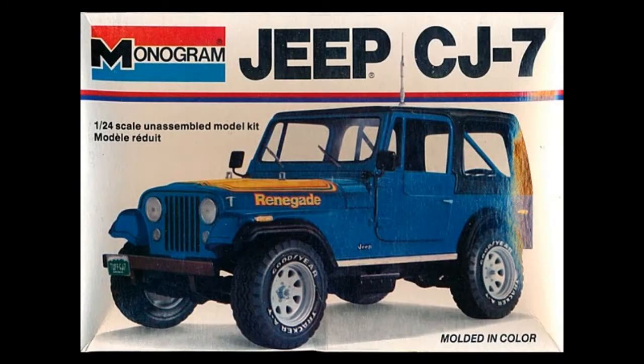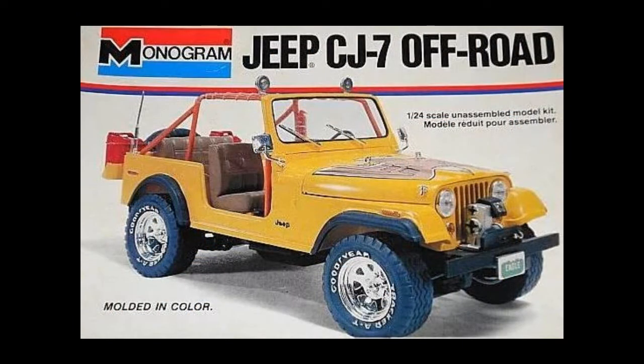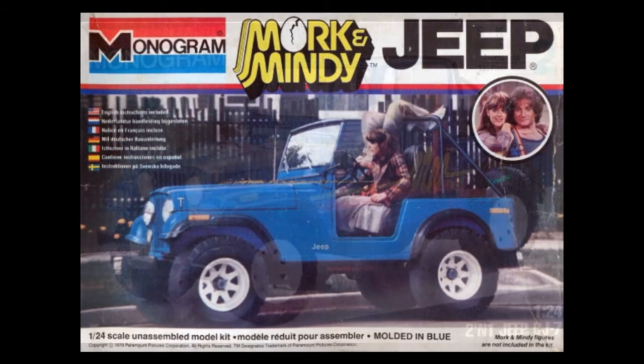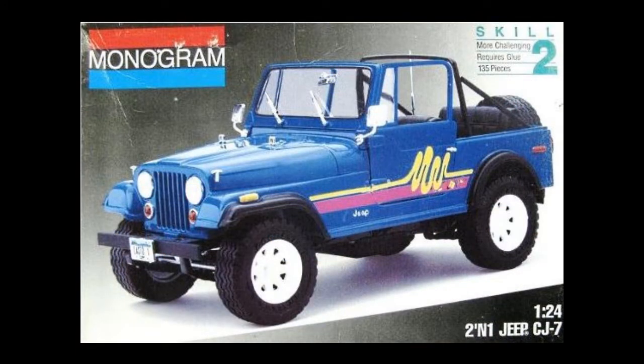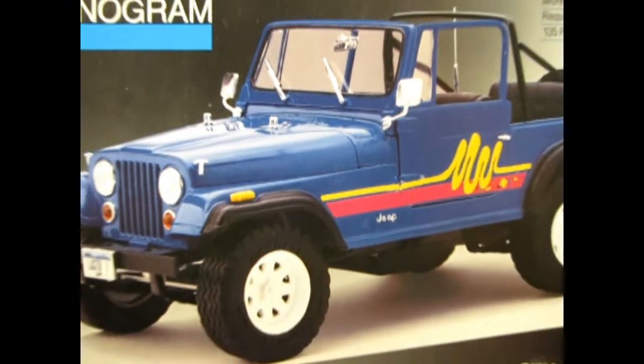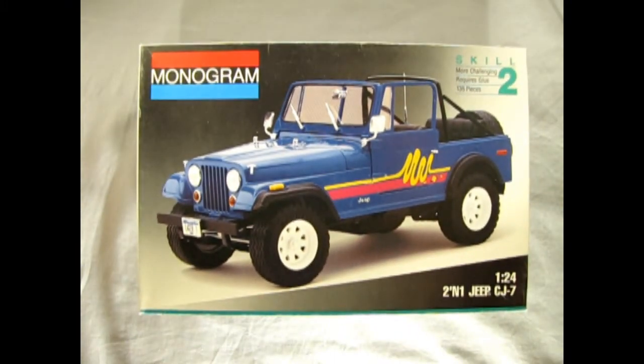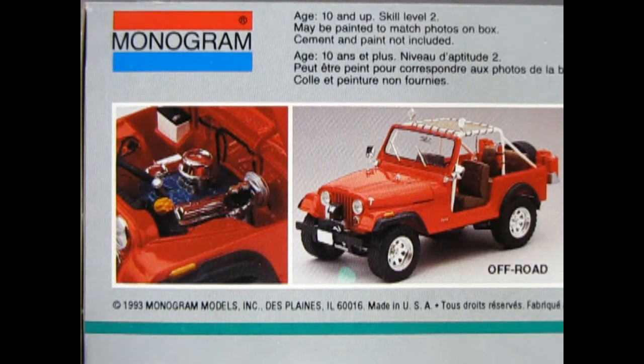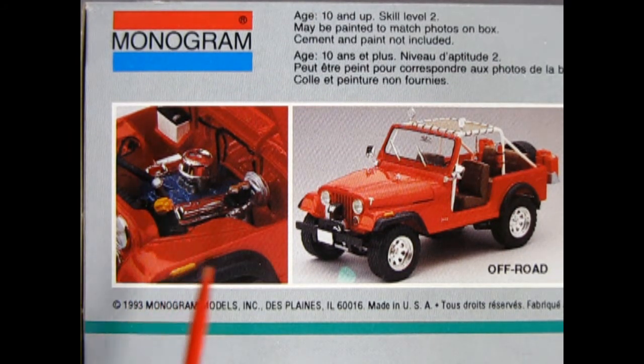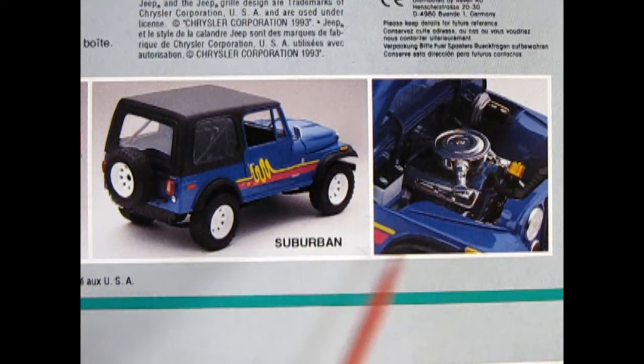We wind our clocks all the way back to 1977 as we check out the Monogram 2-in-1 Jeep CJ7. This edition of the Jeep came out in 1993 by Monogram Models and includes a version for building the off-road or the suburban.